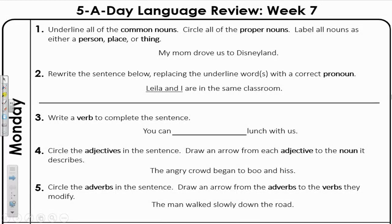Number one: underline all of the common nouns, circle all of the proper nouns, and label all nouns as either a person, place, or thing. The sentence is: My mom drove us to Disneyland.